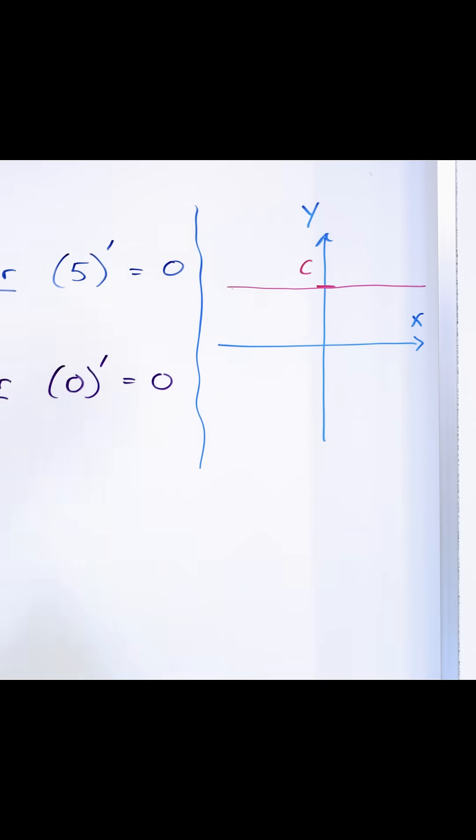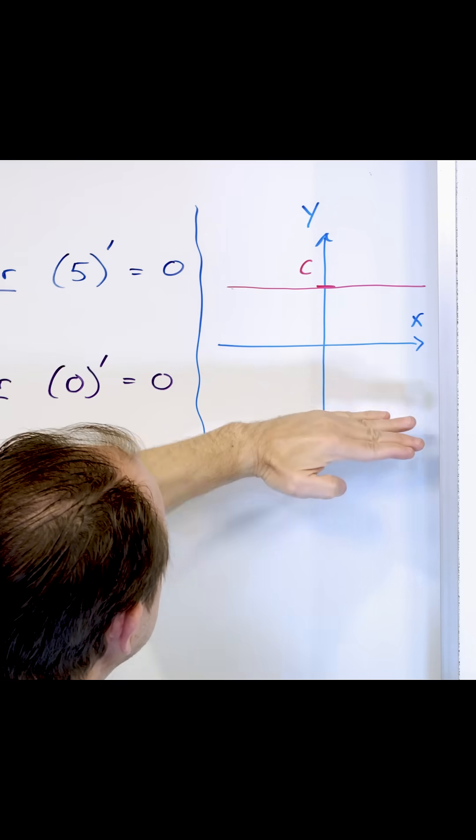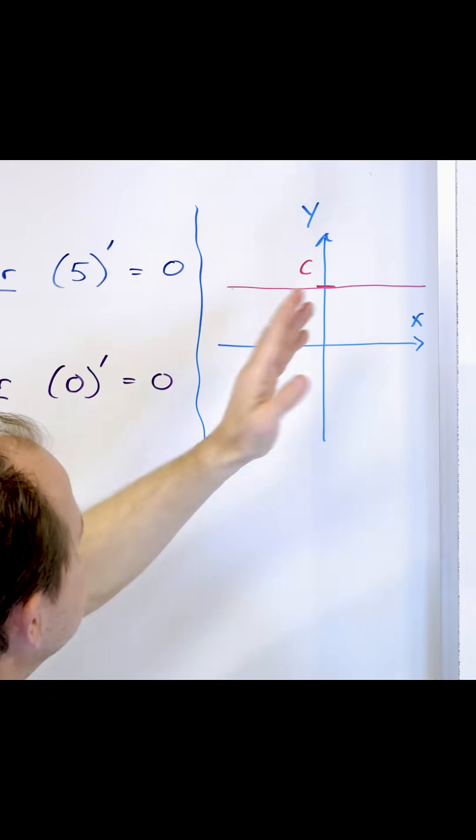I'm going to leave it general. So it could be c is equal to 3 or 5 or 10, or it could be down here, negative 1, negative 2, or negative 1.5 or whatever. It's a constant function.